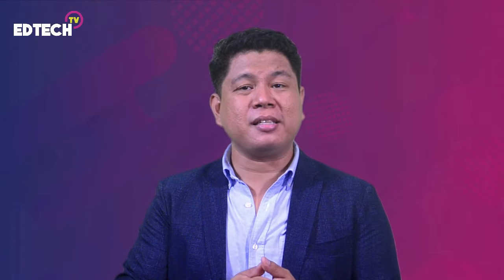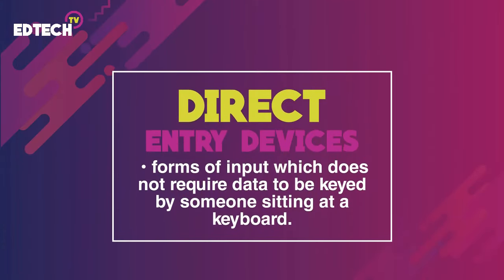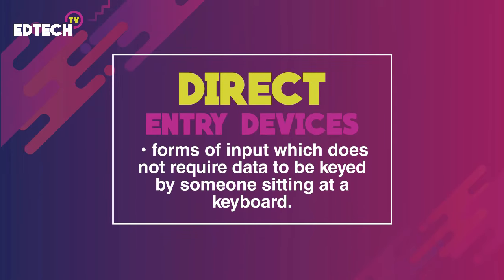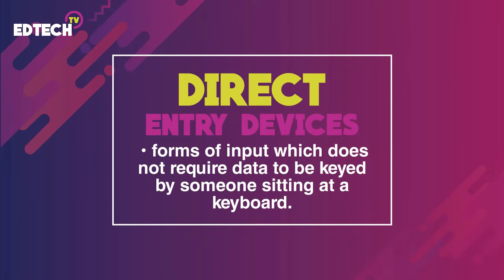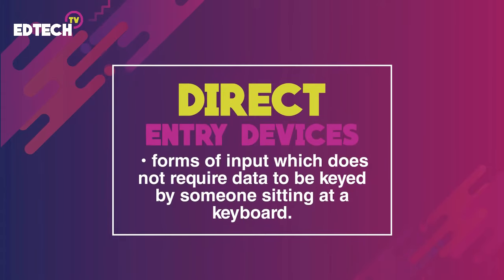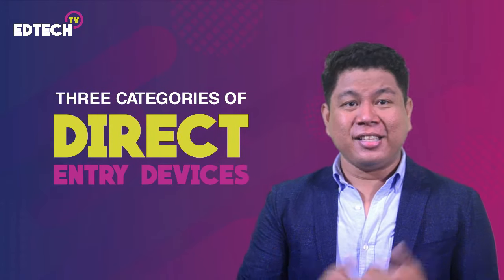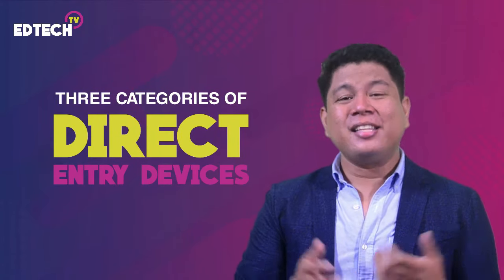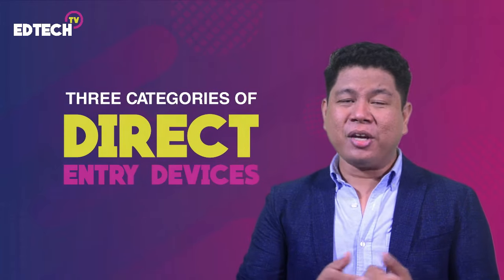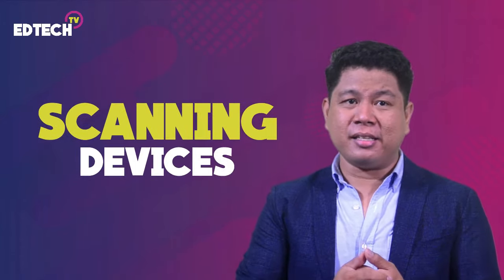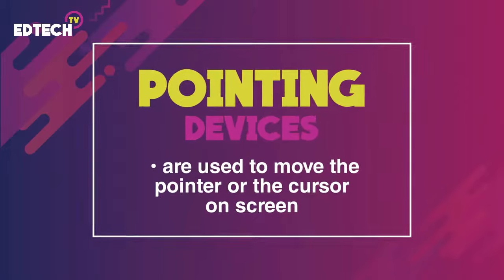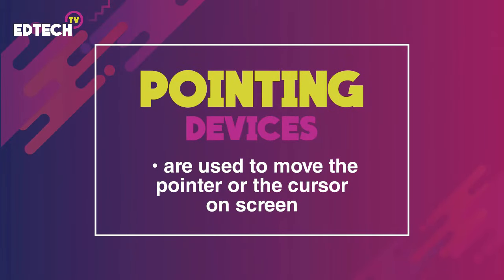The second type of input devices is what we call direct entry devices. These input devices are forms of input which do not require data to be keyed by someone sitting at a keyboard. These devices create machine-readable data on paper, magnetic media, or feed it directly into the computer's CPU. We have three categories of direct entry devices: pointing devices, scanning devices, and voice input devices. Pointing devices are input devices used to move the pointer or cursor on screen.